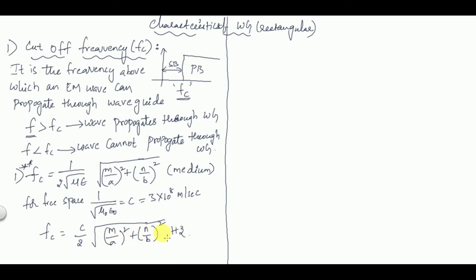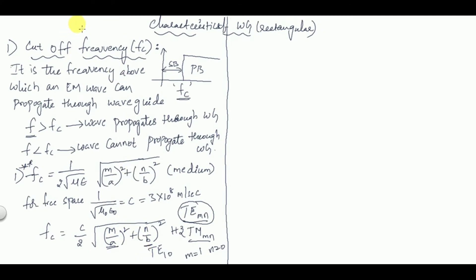Here, m and n are the half-wave variations. The waveguide supports TE mn mode or TM mn mode. For example, if TE₁₀ mode is given, then m = 1 and n = 0 — that is how we take the values of m and n. The dimension 'a' represents the length (broader side) of the rectangular waveguide and 'b' represents the height, and generally a is always greater than b.